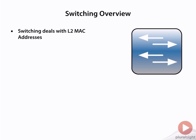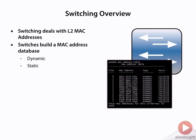LAN Switching deals with Layer 2 MAC addresses. We have a switch here in this diagram, and this switch is going to build a MAC address database. There are multiple ways that this database can be populated. It can be done dynamically, which in this screenshot here, you can see is how all of these MAC addresses have been learned.